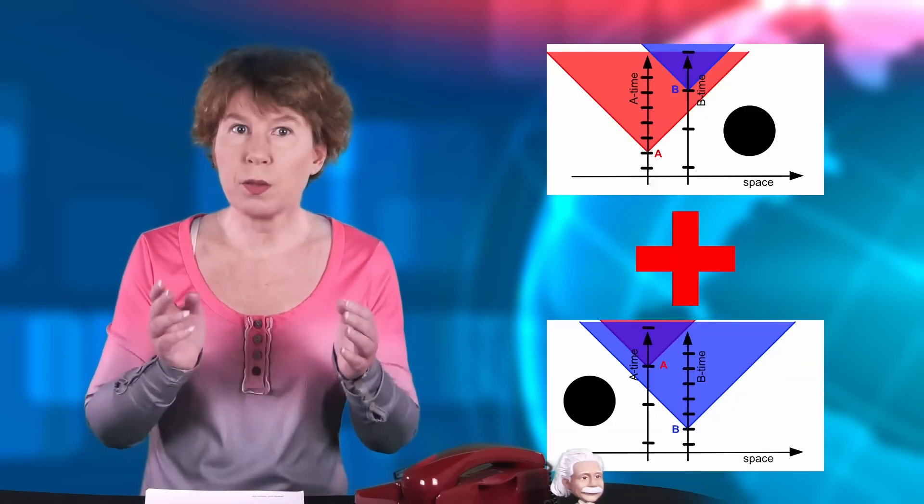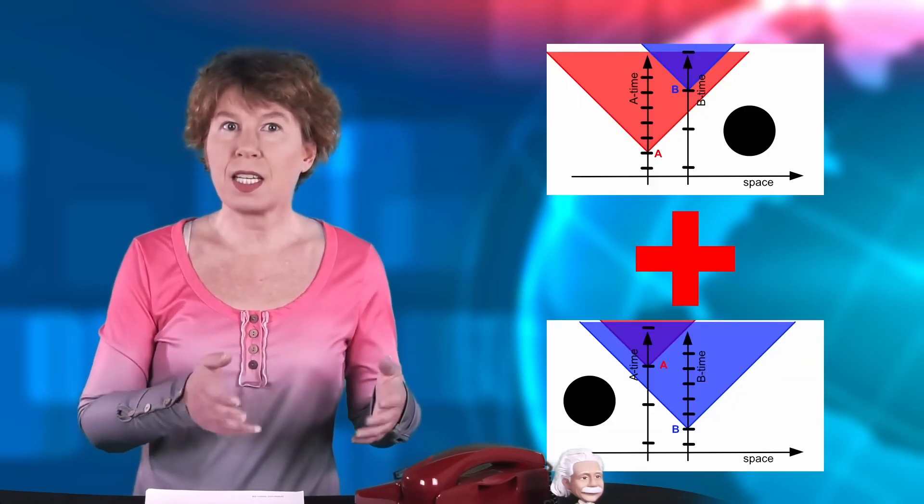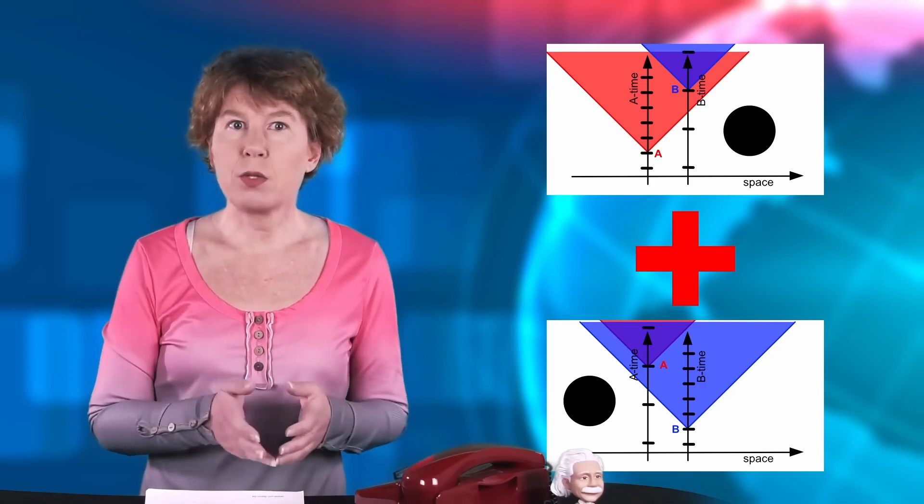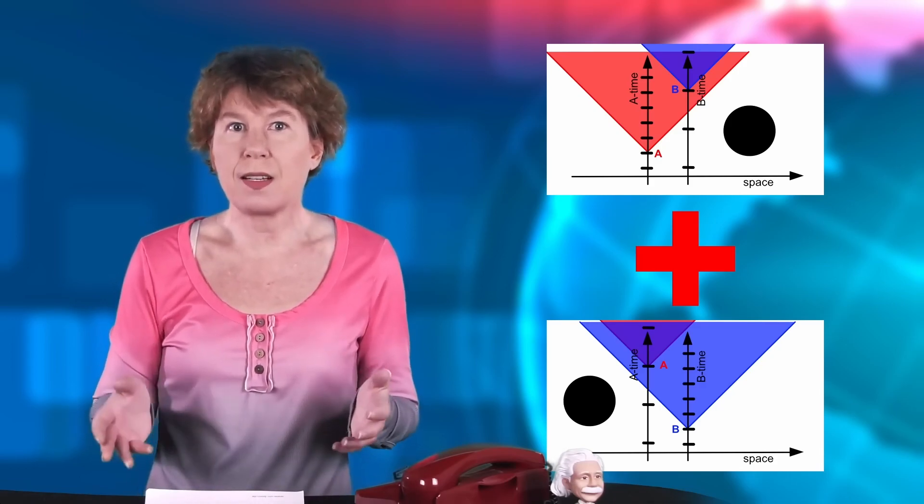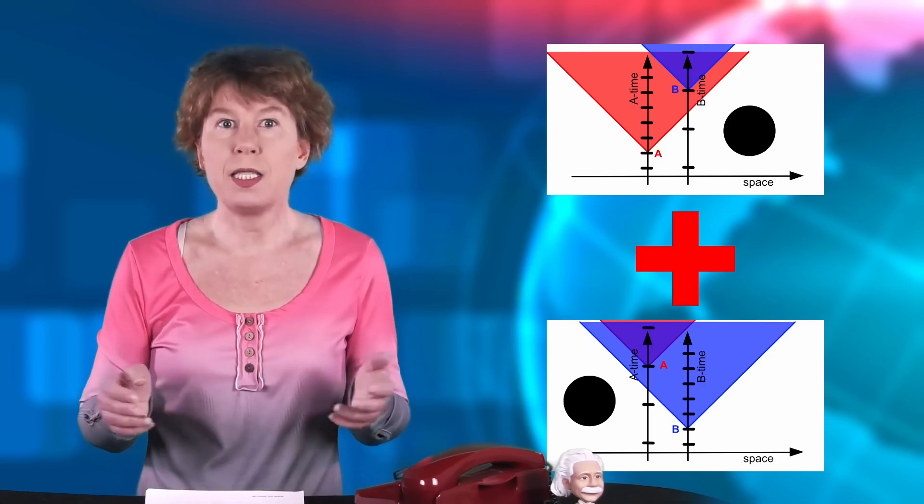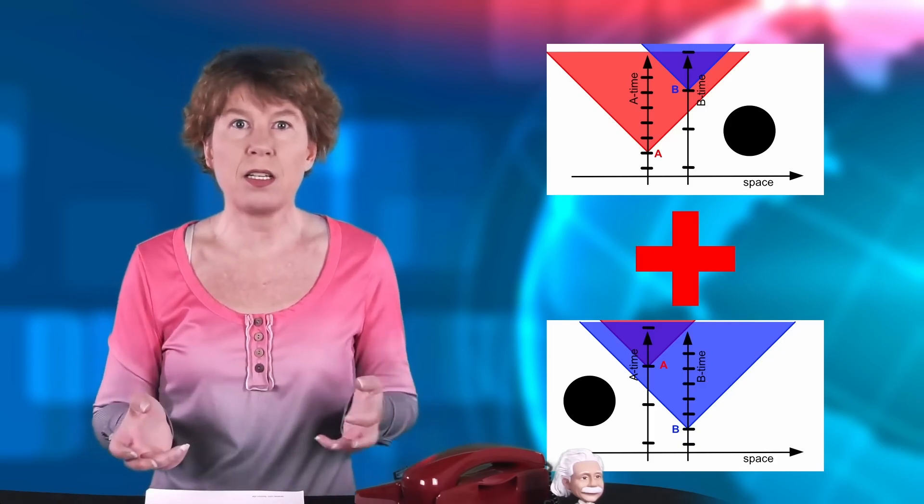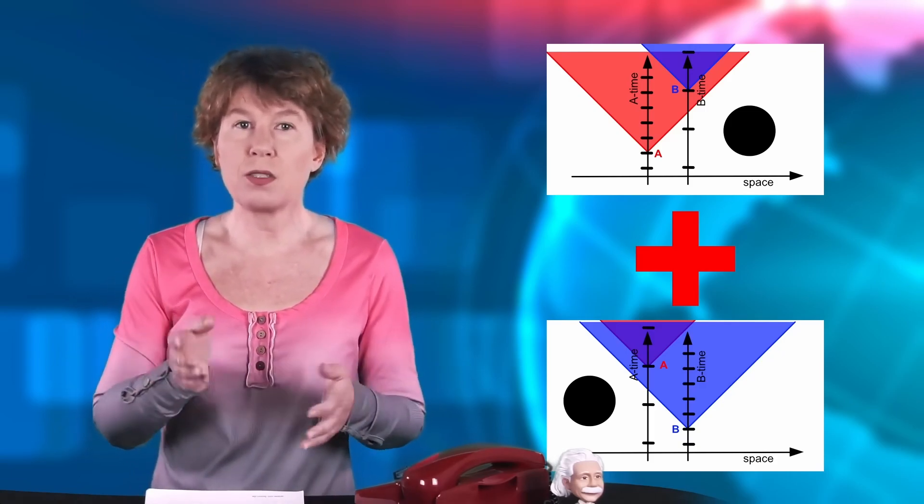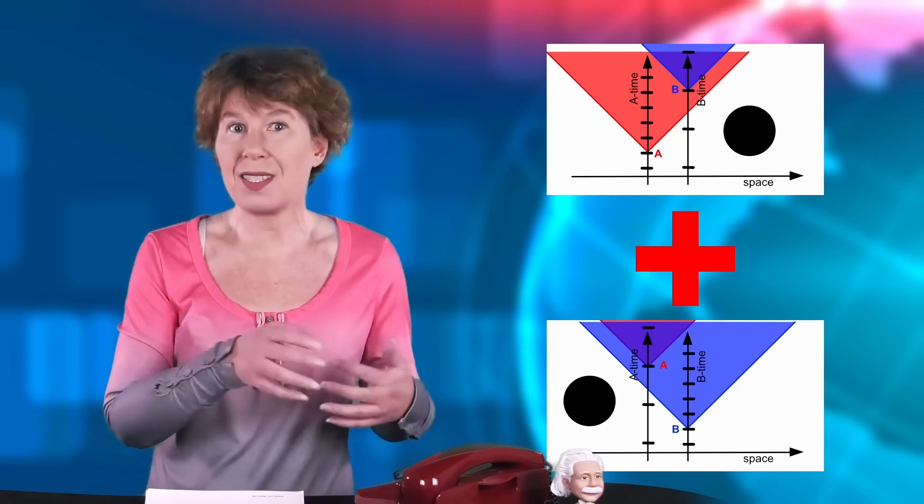Well, now imagine that the black hole is in both places at the same time. So which event can influence which one? If A was flipping a switch and B was the light turning on, then it seems that depending on how spacetime is curved, either the switching caused the light or the light caused the switching.